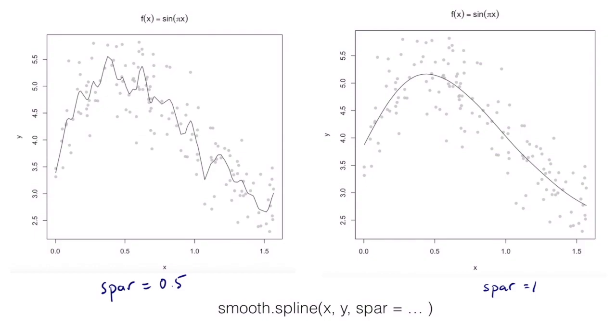As with kernel estimates, there's some subjectivity here. You have to choose lambda, and often the choice of lambda is done through observation - try some different lambdas and settle on one that you think is reasonable. But there also are automatic methods for choosing lambda, like cross-validation. There are some built-in methods in R that will do the cross-validation for you.